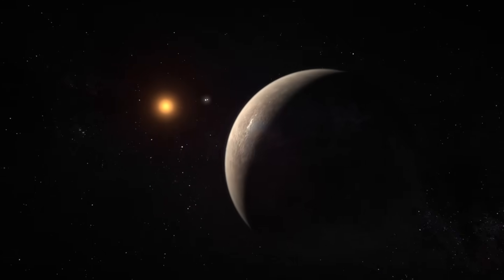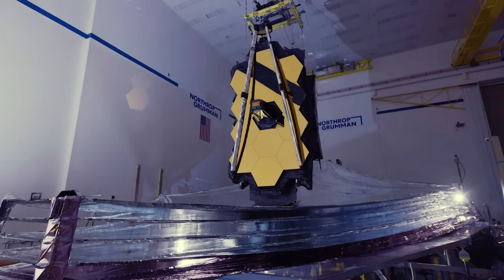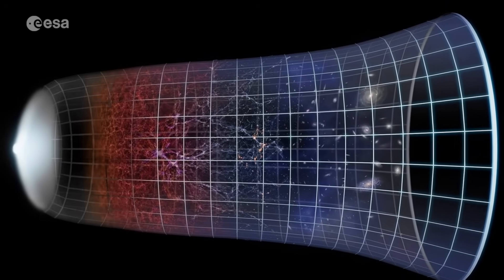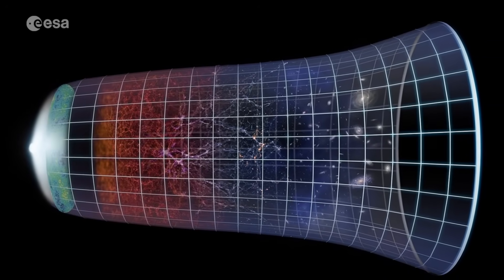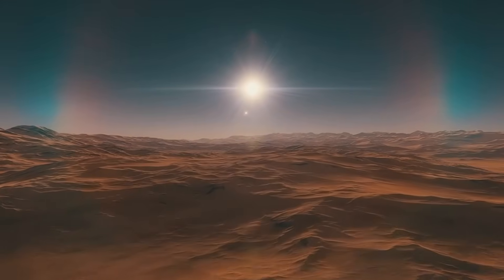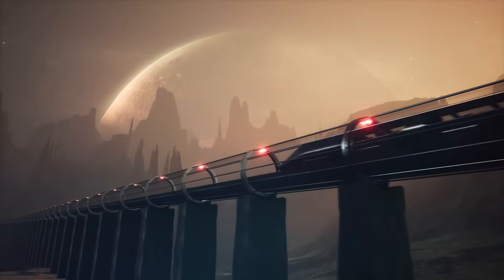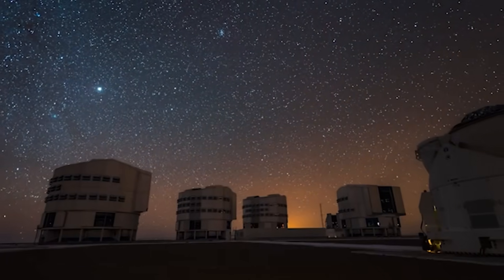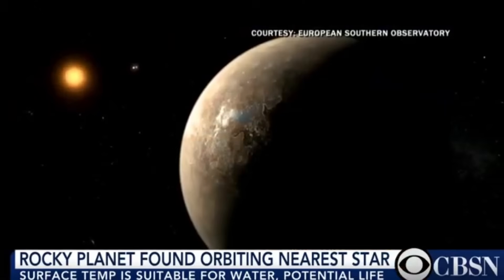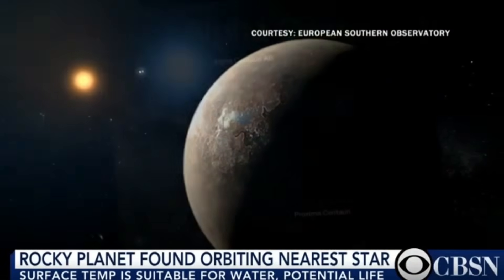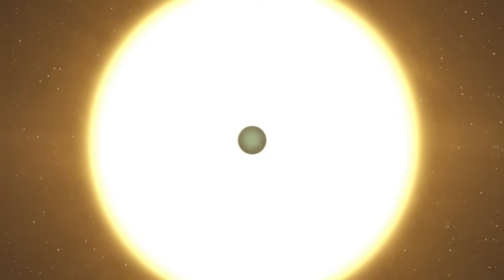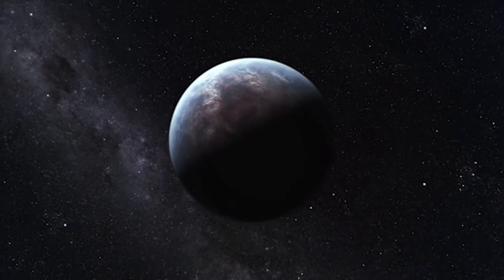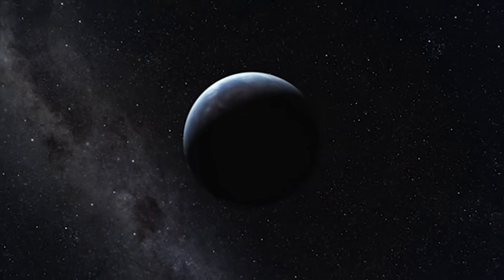Plus, it forces us to consider what kind of civilization we are or want to become as we explore the cosmos. One thing is for sure, if these lights are real, they could be the catalyst for some serious international cooperation. Studying a planet that's light years away is not a job for just one country. It is going to require the kind of teamwork we have seen with projects like the International Space Station. Many countries would have to come together, pool resources and share knowledge, all for the common goal of exploring Proxima b and potentially making contact. This could inspire a new wave of collaboration and space exploration.